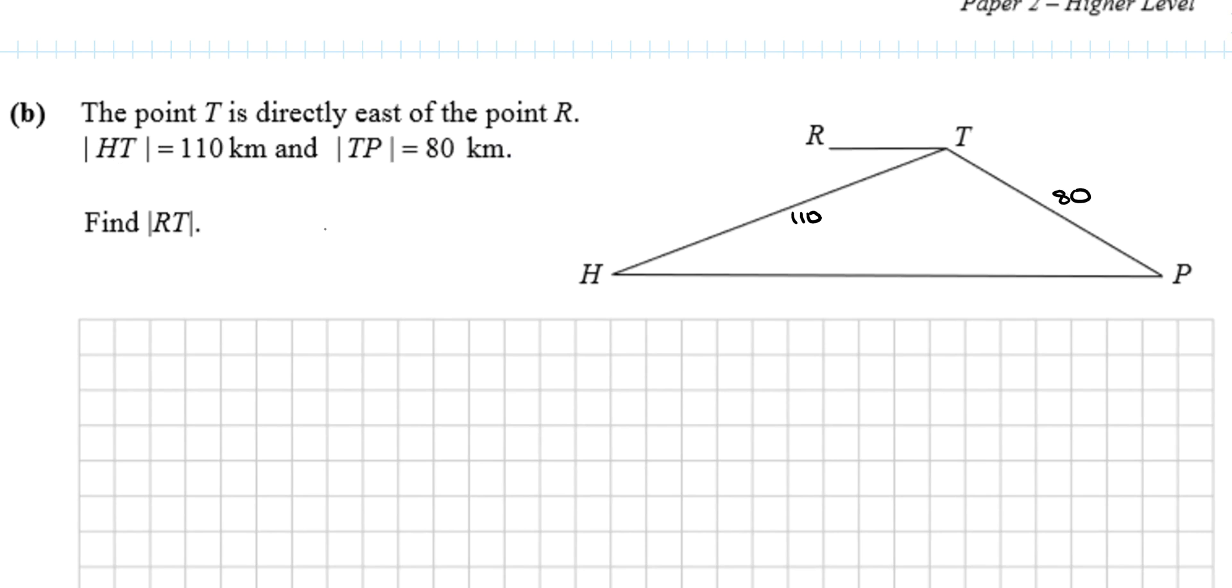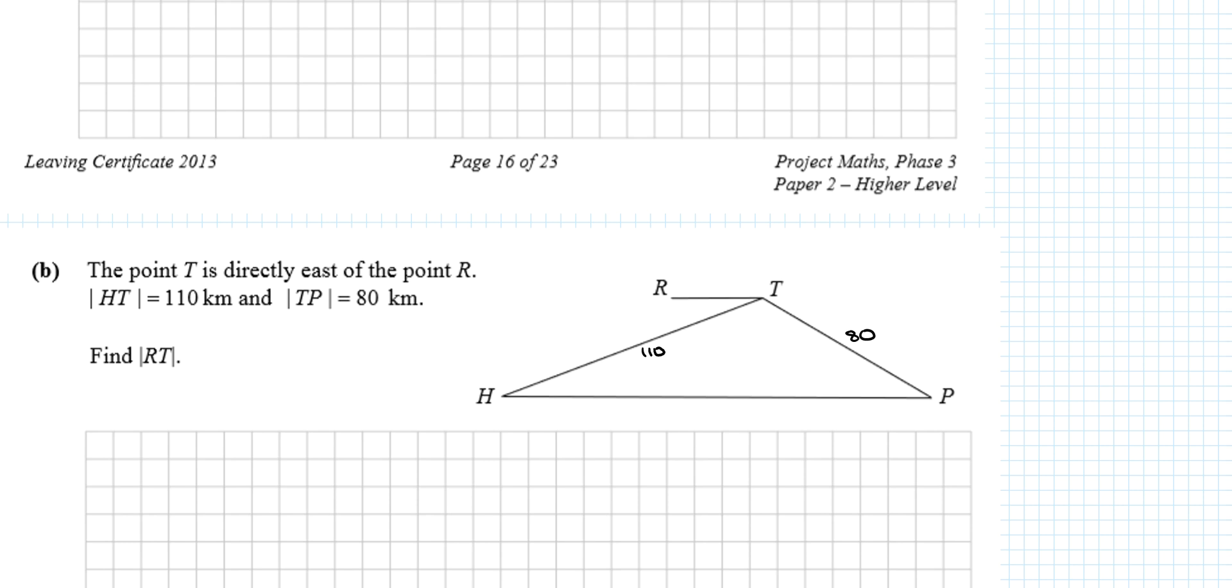This was our previous diagram: 80, 110, 36 degrees, and I think we had 124 degrees up here.